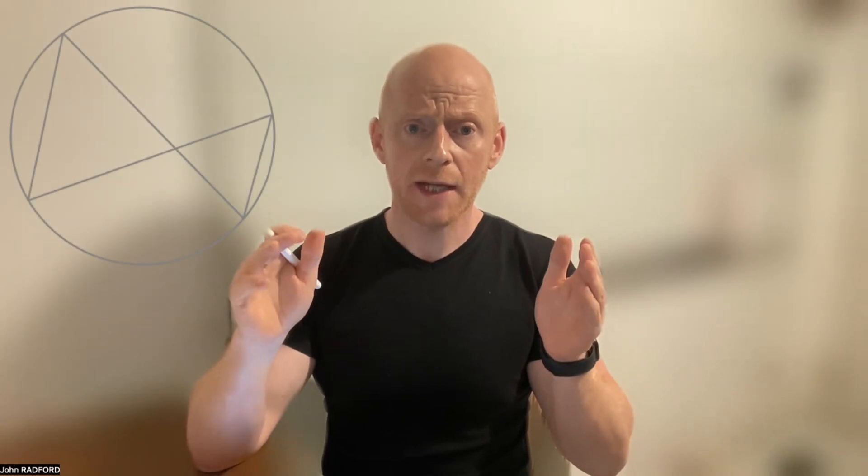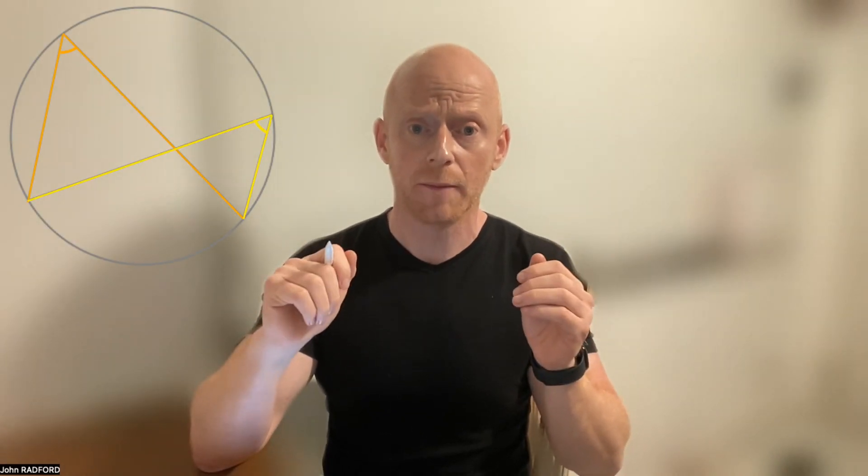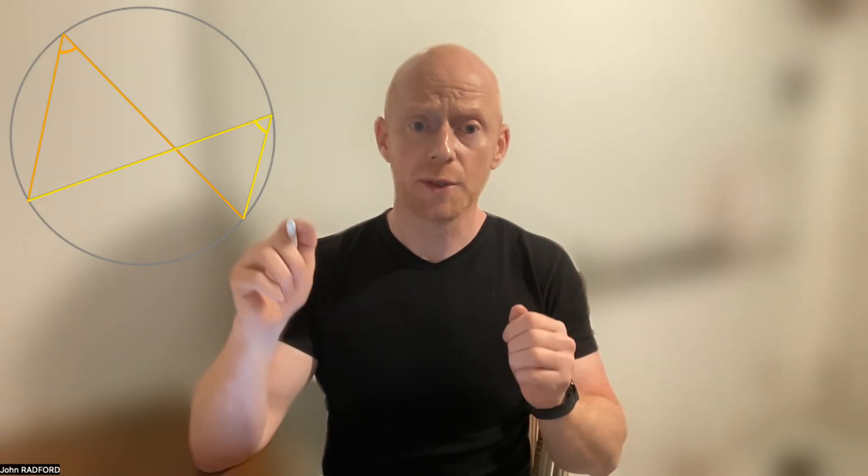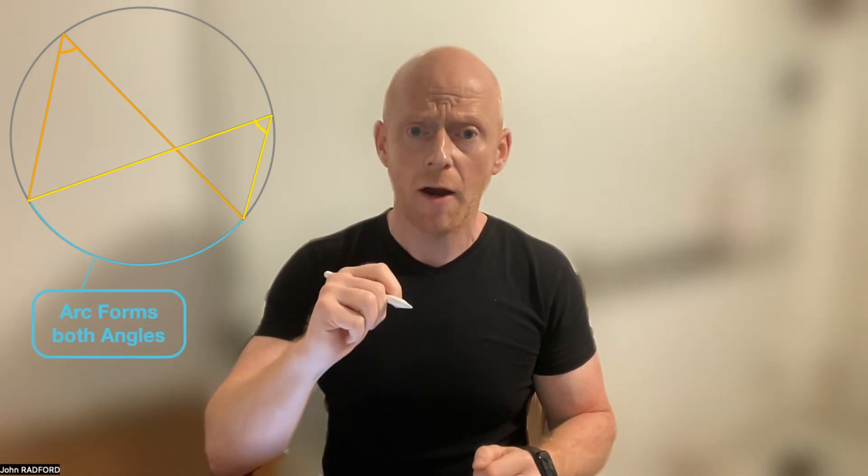Hi everyone, I'm John from Radford Mathematics, and in this video on circle theorems we're going to be learning about the rule involving a circle and two angles at its circumference. It states: given a circle with two angles at its circumference, if those two angles are subtended by the same arc, then those two angles are equal.